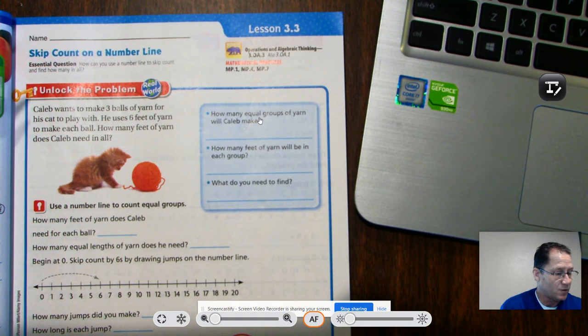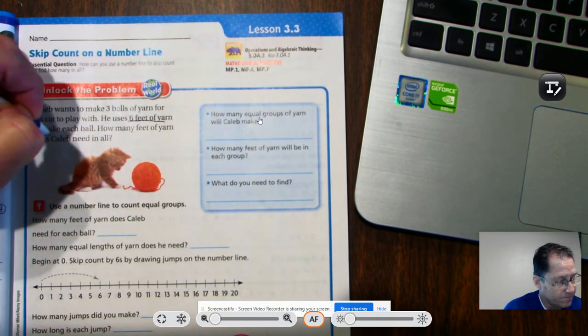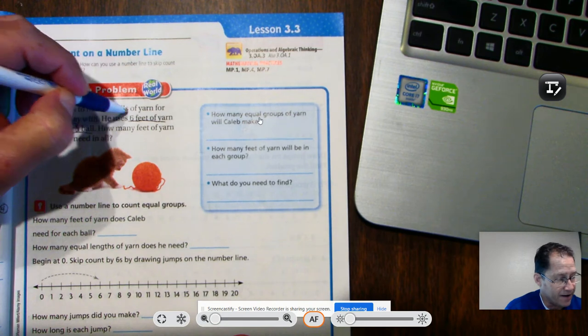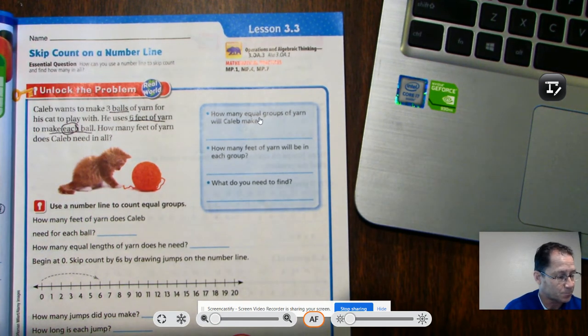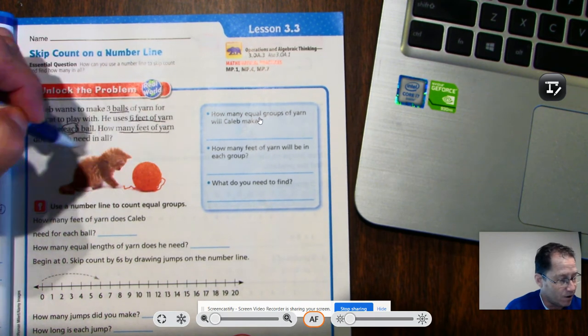Here's the problem. Caleb wants to make three balls of yarn for his cat to play with. He uses six feet of yarn to make each ball. How many feet of yarn does Caleb use in all? So six feet of yarn for each ball, he wants to make three balls.